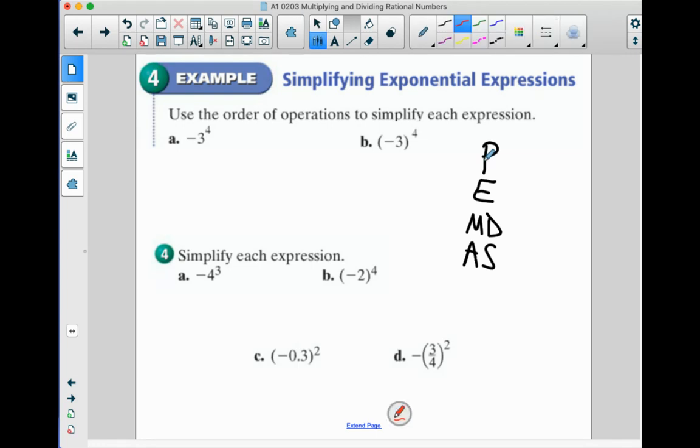So if you look on A, we would actually do 3 to the 4th first. This is essentially saying the opposite of 3 to the 4th. So it's like negative 1 times 3 to the 4th, or negative 1 times 3 to the 4th is 3 times 3 times 3 times 3.